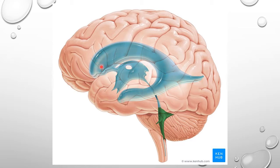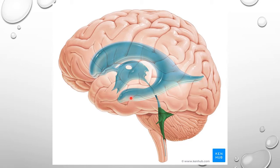The lateral ventricle has an anterior horn in the frontal lobe, a posterior horn in the occipital lobe, and an inferior horn in the temporal lobe. The body of the lateral ventricle is in the parietal lobe, extending into the posterior part of the temporal lobe. The hippocampus is present at the floor of the inferior horn of the lateral ventricle, as shown here with the pointer.